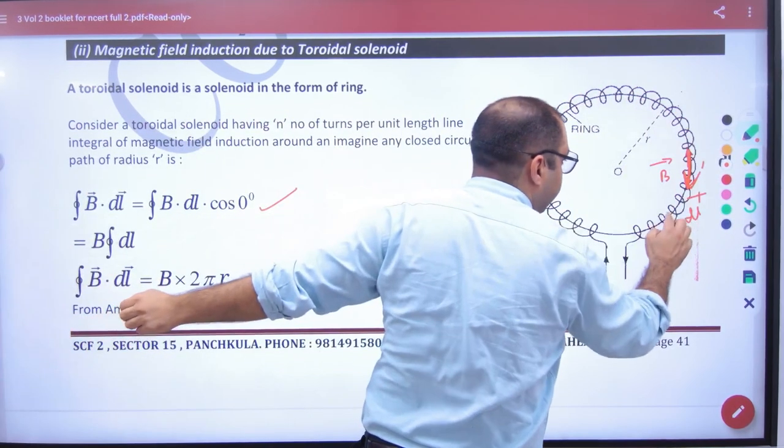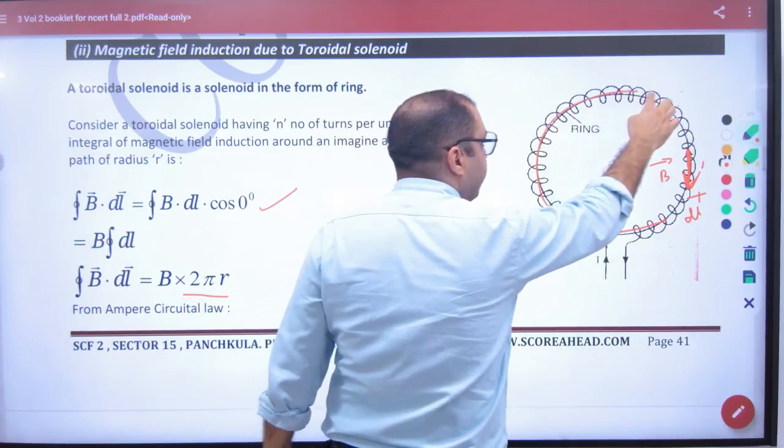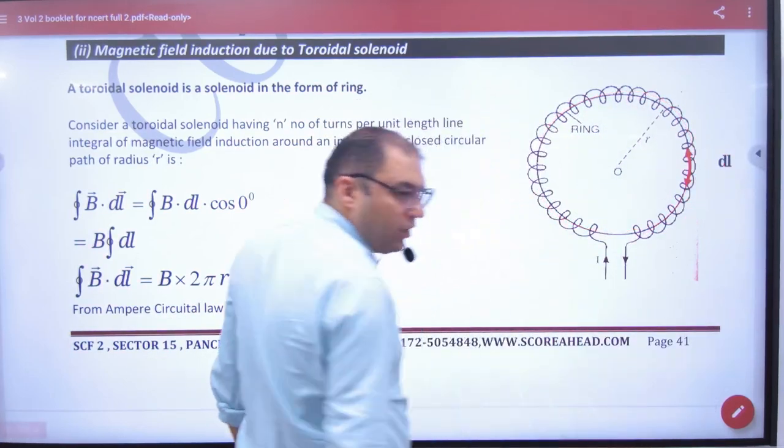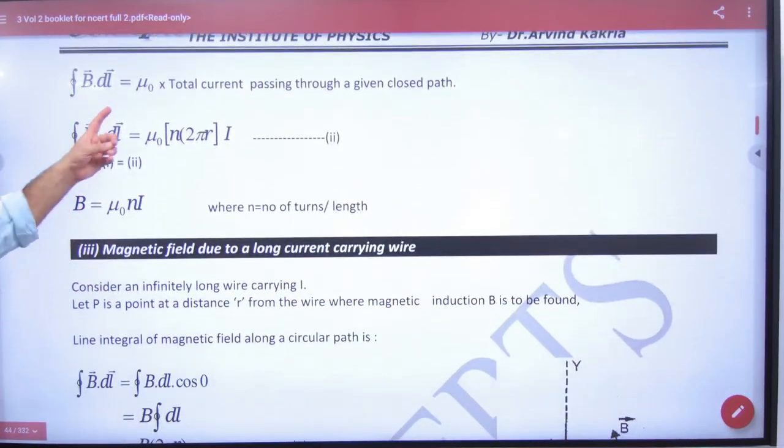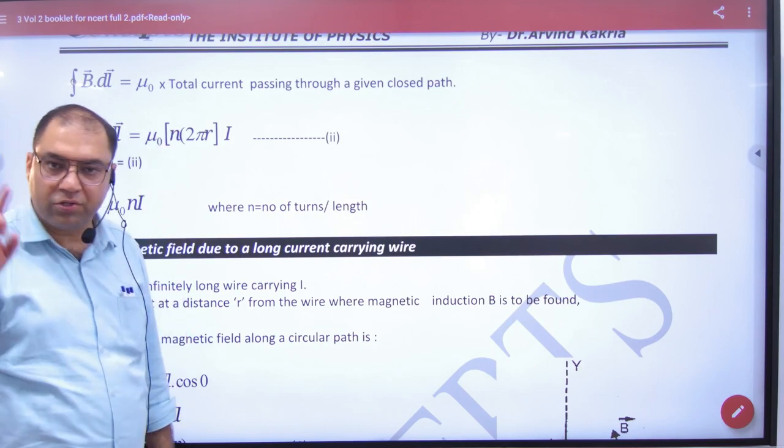This closed path line is imaginary. So closed path B into 2πr. Now I know that B dot DL will be μ₀ into total current which is going through the closed path.